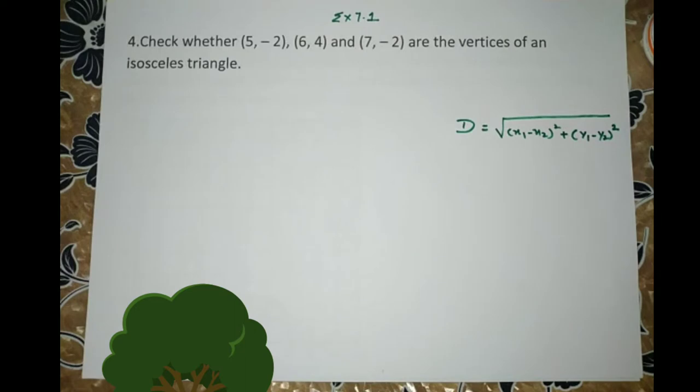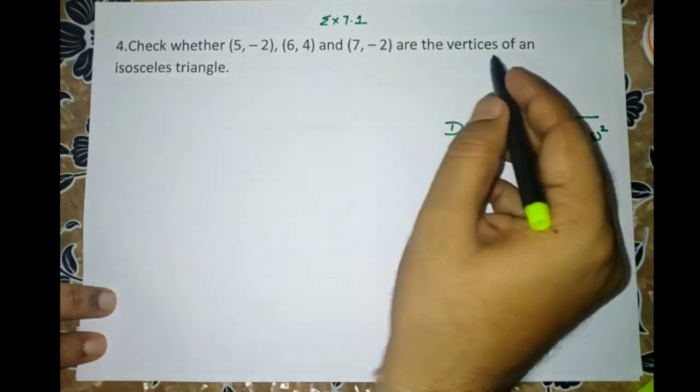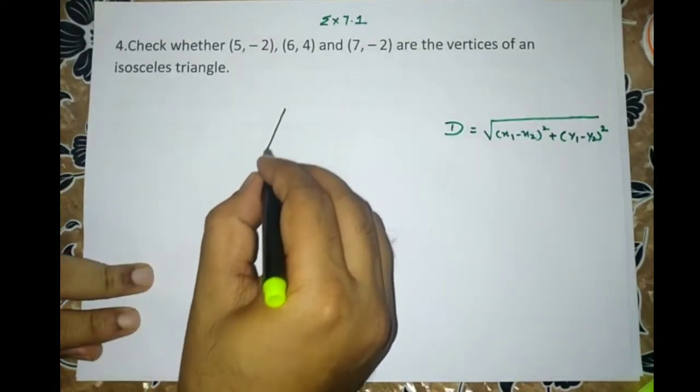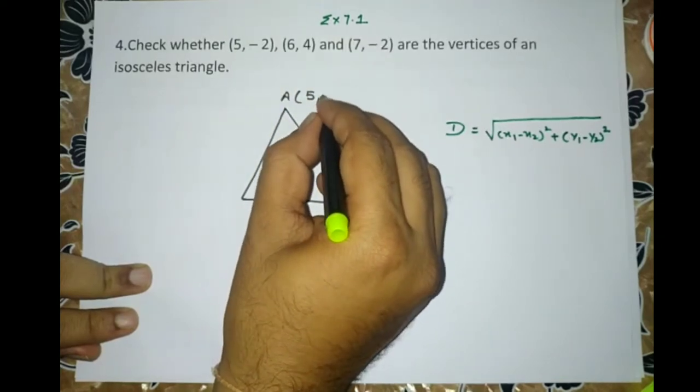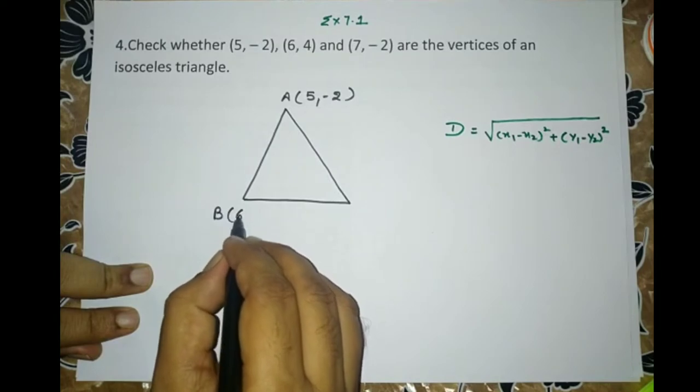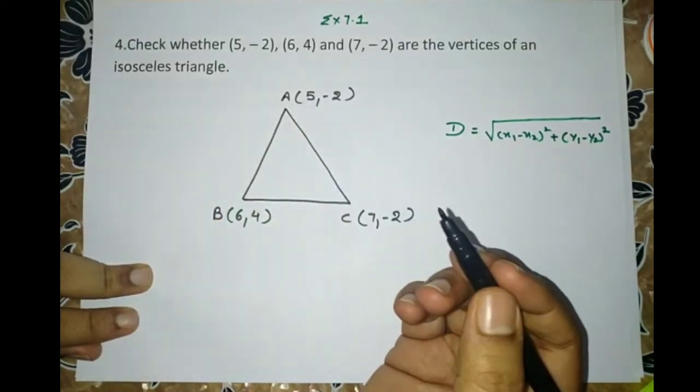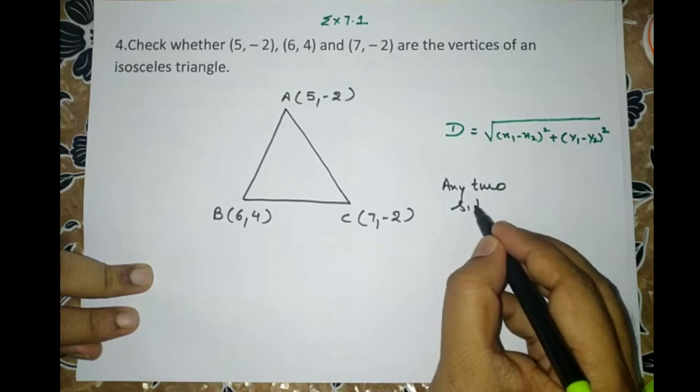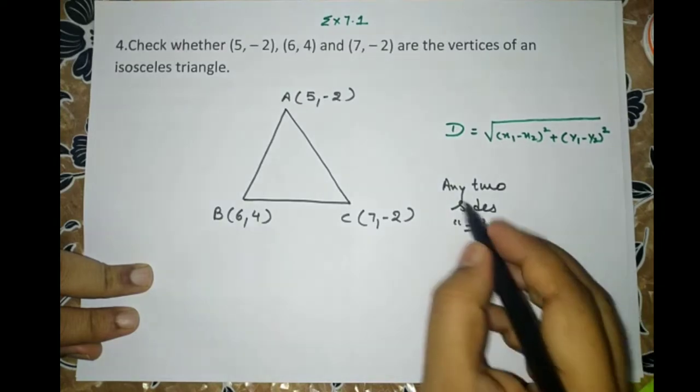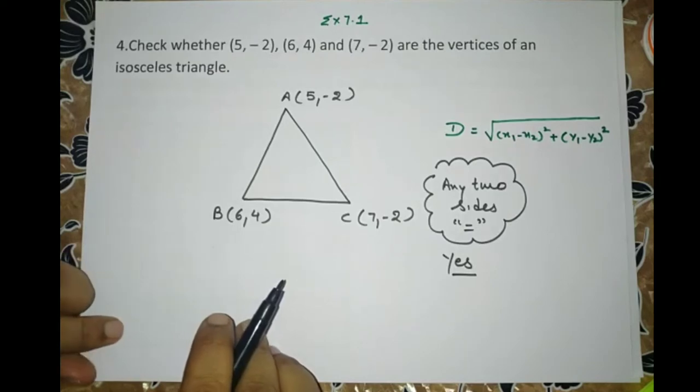I will only give hint for this question. As you can easily see, the author is talking about isosceles triangle and these are the three vertices. So let us first of all make a triangle and assume these three points as the vertices. Let the point 5, minus 2 is A, 6, 4 is B and 7, minus 2 is C. Now we will find AB, BC and CA and if any two sides are equal, we will say it is an isosceles triangle. Otherwise, not. So I leave the solution to you.